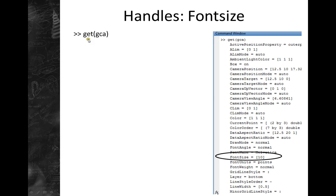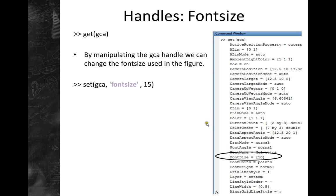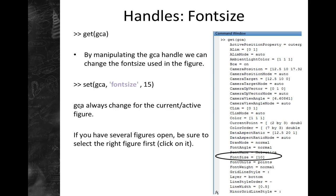So here I just did GET on the GCA handle. For example, font size is one of the things we can change, and that's one of the things you usually want to change because the default font size is really small. We can use SET on the handle to change the font size to 15. GCA is always the handle to the current figure, so if you have many figures open you need to be sure that you switch to the right figure before you change it.